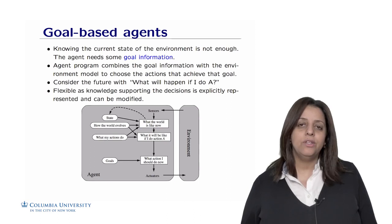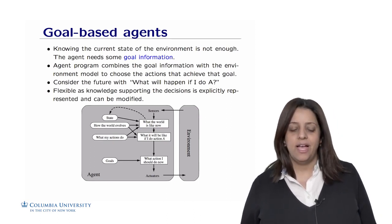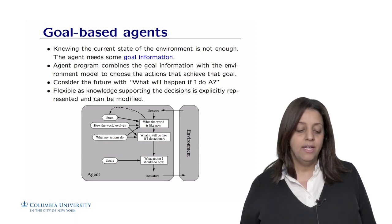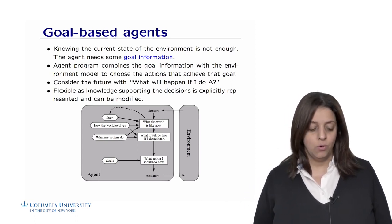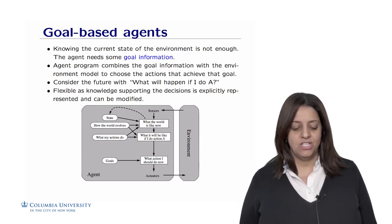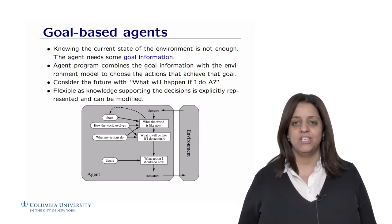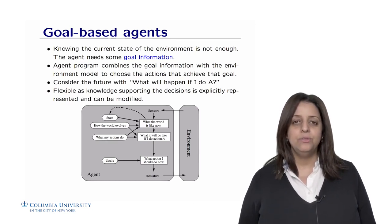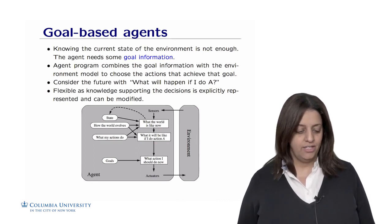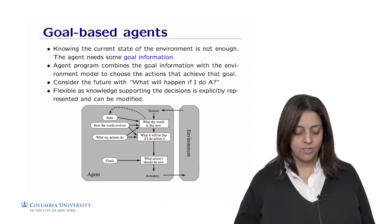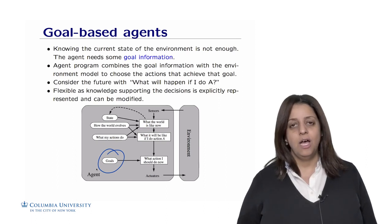Goal-based agents are needed when knowing the current state of the world is not enough. The agent needs extra goal information. The agent program combines goal information with the environment model to choose actions that achieve that goal. It considers the future with questions like 'what will happen if I do action A?' — there is deliberation instead of just reacting with a reflex. Because goals can be huge, there is no simple lookup table.